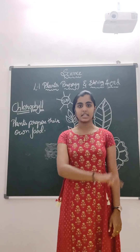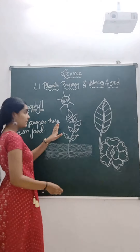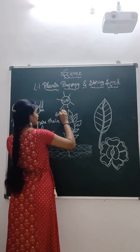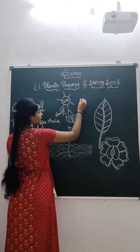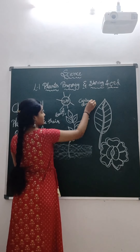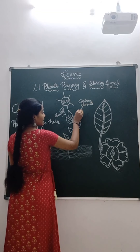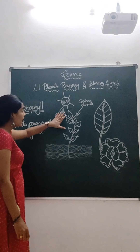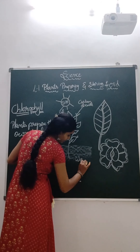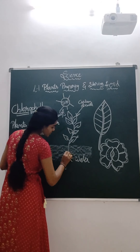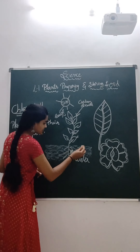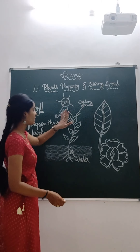Now let us see how plants prepare their own food. Here is a plant. This plant is taking sunlight from the sun. It is taking carbon dioxide from the air. And the plant also takes water from its roots. Plants have roots, right? So they take water from the roots. It is taking water, carbon dioxide and sunlight.